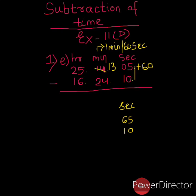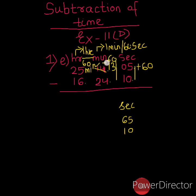As we have taken 1 minute from the minute group, 14 becomes 13. But here, 13 minus 24 is not possible, so we will borrow 1 hour from the hour group. 1 hour equals 60 minutes. 60 minutes will be added to the minute group, so 60 plus 13 will be 73. Now in the minute group we have 73 minus 24.